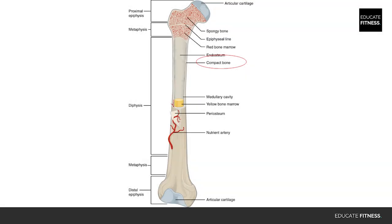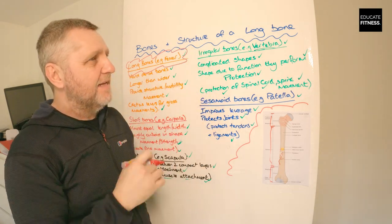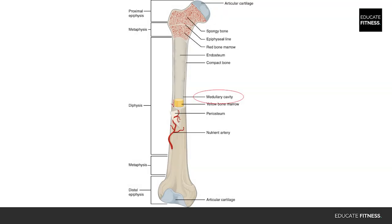Compact bone is solid and strong, helping the long bone withstand weight-bearing stress. Up on the diagram you can see spongy bone, also known as cancellous bone — this is spongy bone tissue that contains red marrow. Flat, short, and irregular bones are mainly comprised of cancellous or spongy bone. The medullary cavity is the hollow tube down the centre of the compact bone.